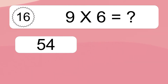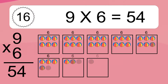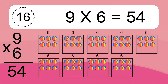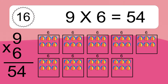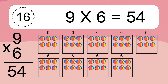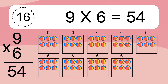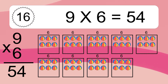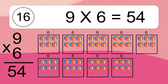9 times 6 equals 54. We have 9 boxes, and each box has 6 colorful balls inside. If you count all the balls in all the boxes together, you will have 9 times 6 balls. This equals 54 balls.